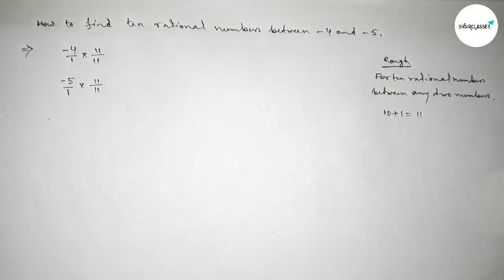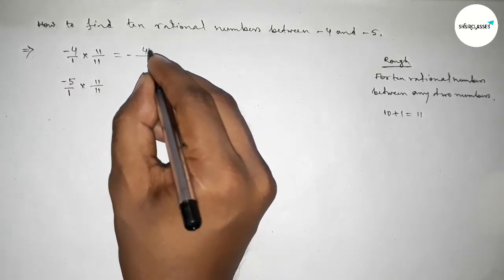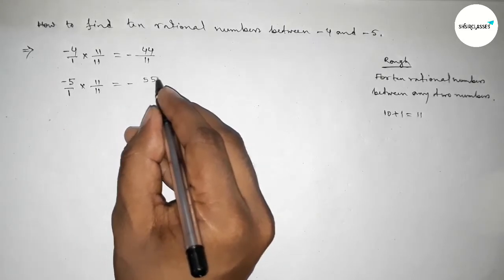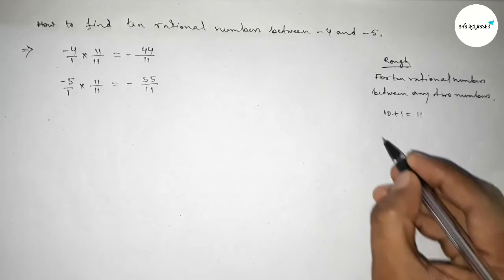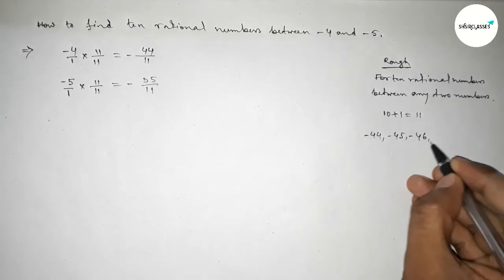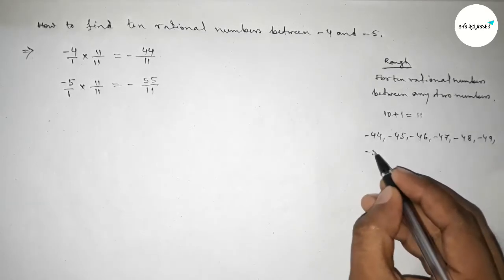Multiplying both numbers by 11 this way, here it equals minus 44 over 11, and here minus 55 over 11. Now between minus 44 and minus 55, we can get 10 negative integers. So here I'll write down all the 10 negative integers by this way. These are the 10 negative integers.